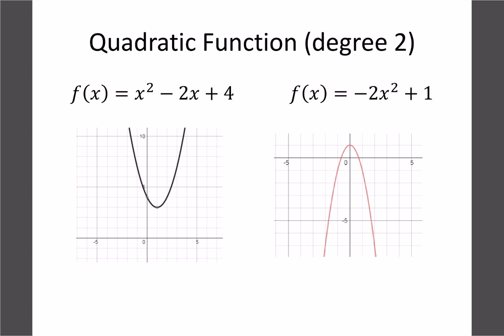The next equation you've done before is quadratic — those are the u-shaped graphs. A quadratic occurs when we have a second degree, so we must have an x squared. If it's a positive leading coefficient we get our u-shape, with a y-intercept at four. If we have a negative out front, it's going to be a downwards u-shape.